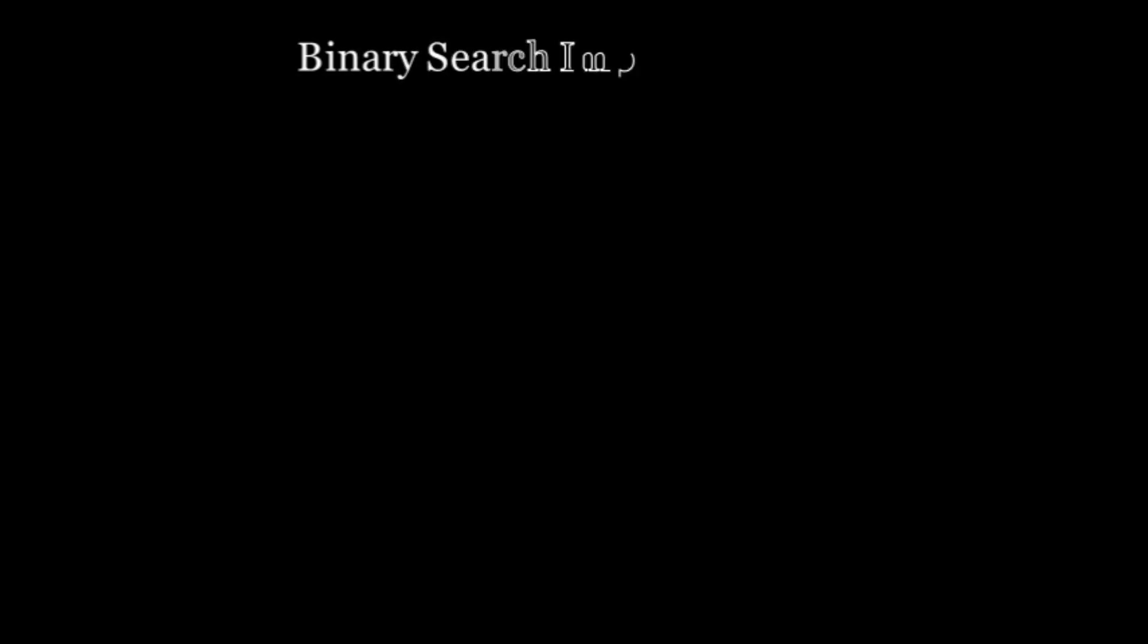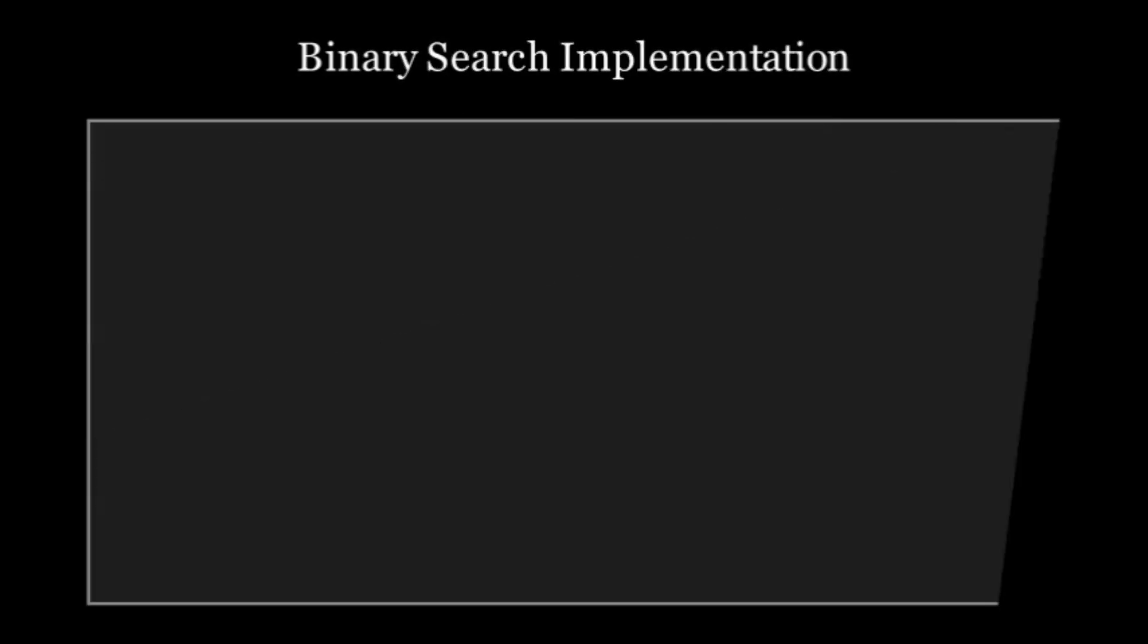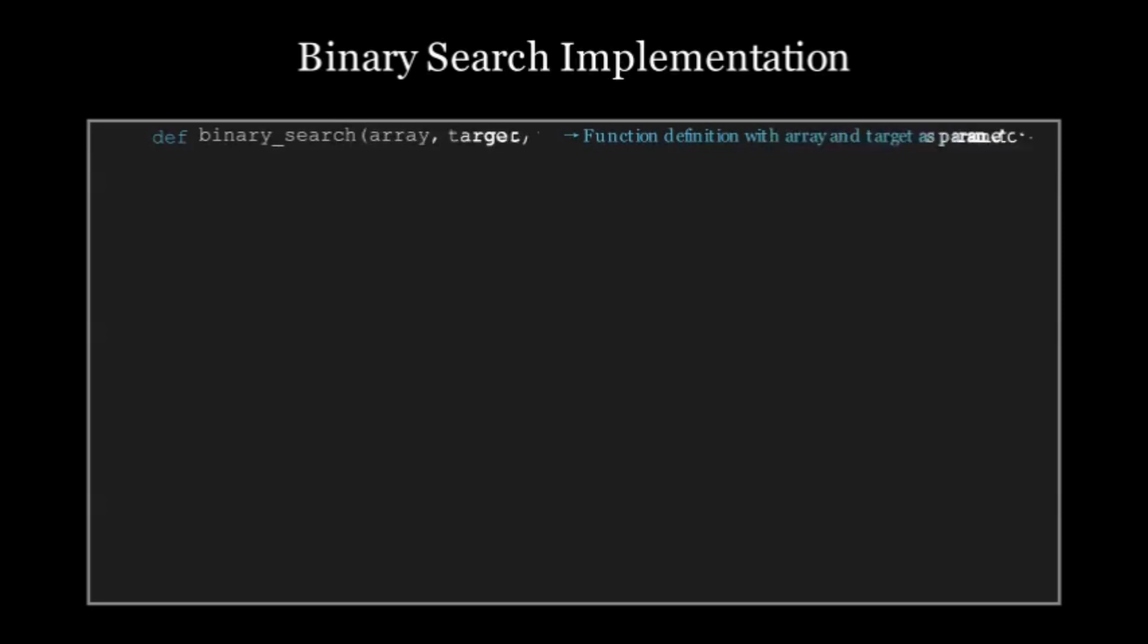So now let's look at the code for binary search. Don't worry if you are not a coding expert. I'll walk you through line by line. First we define the function def binary_search, which takes two parameters, the array and the target. Next, we set up two pointers, left = 0 and right = len(array) - 1. These pointers mark the start and end of our searching space.